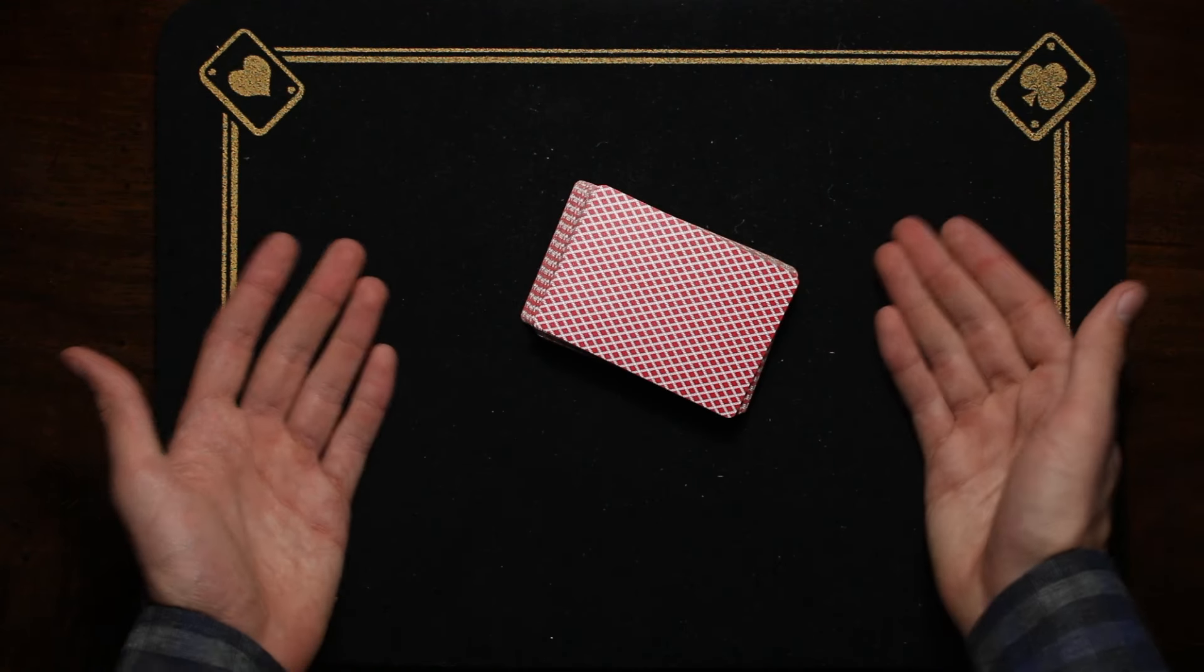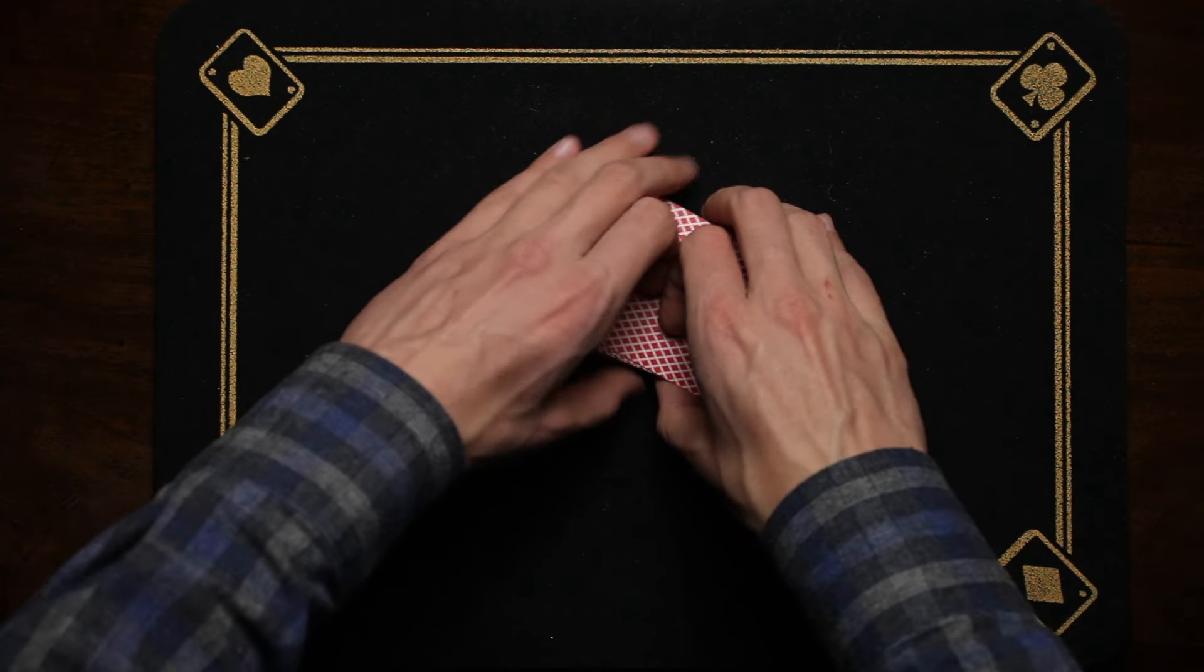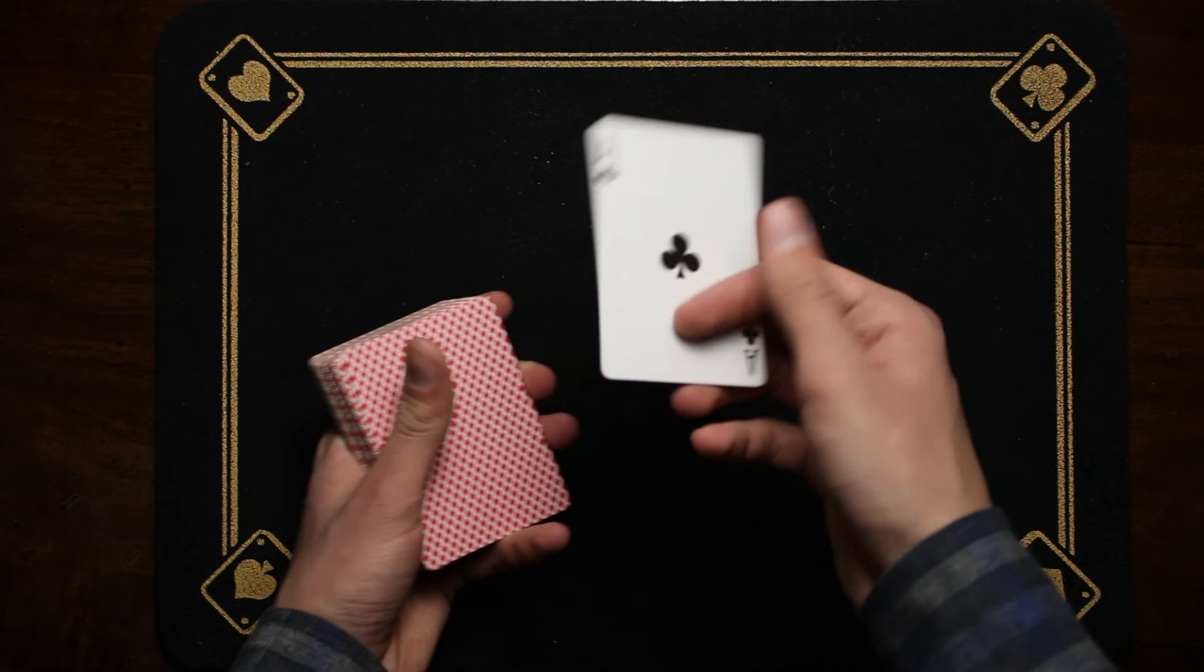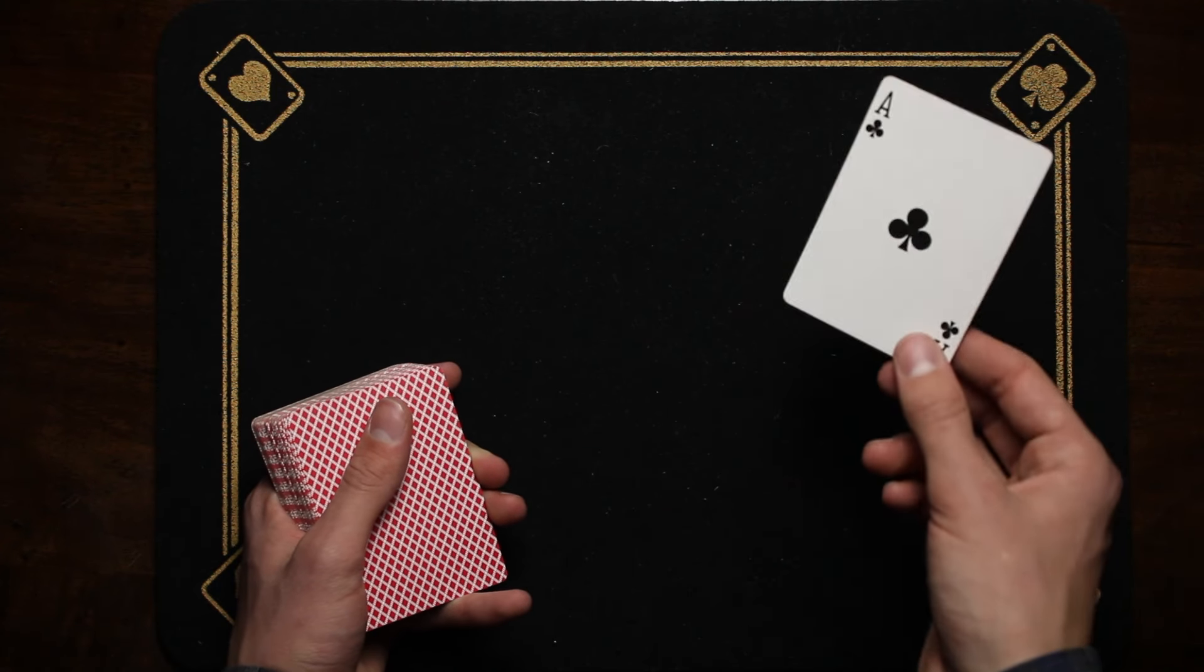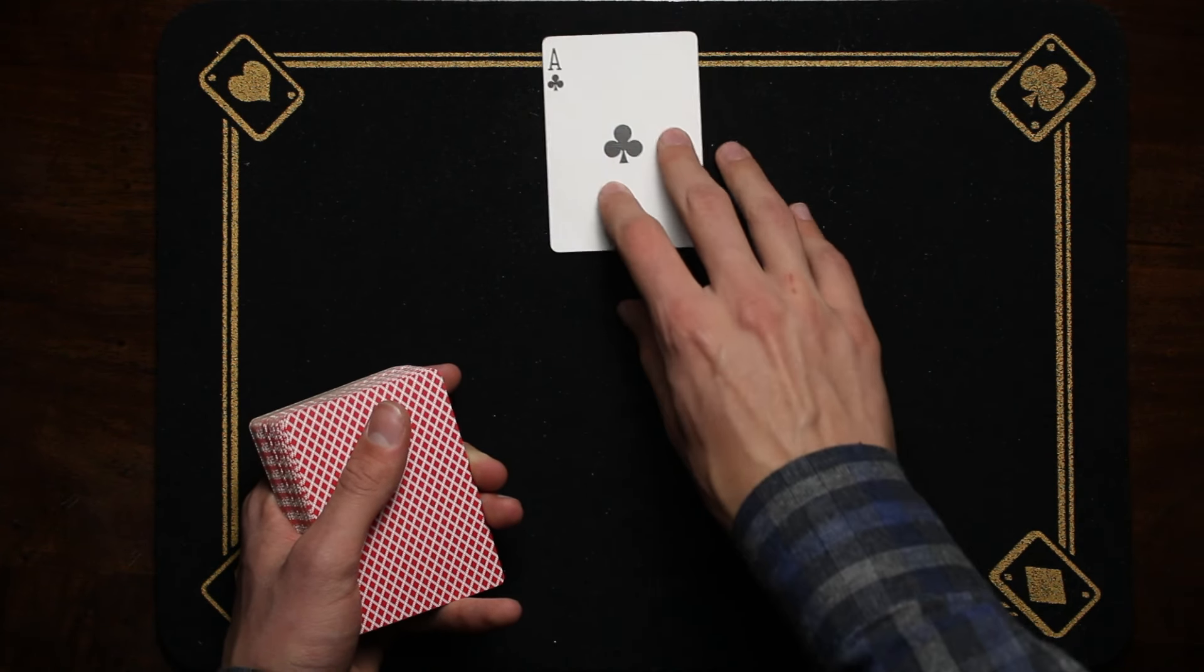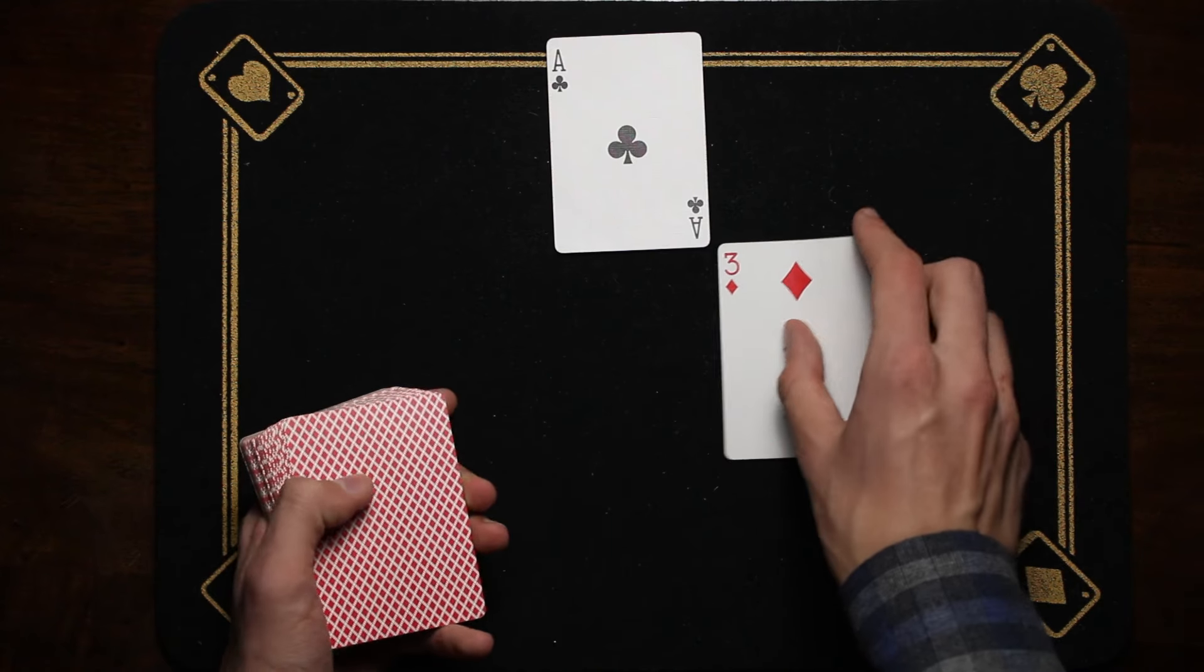With that out of the way, you can now proceed to play the game. Start by turning a card. If it's any other card other than a six or a seven, put it here, the next one here.